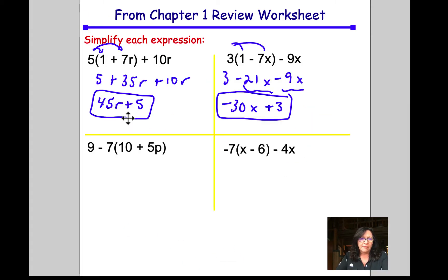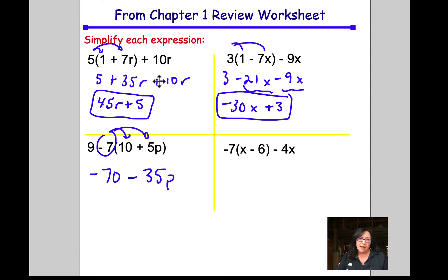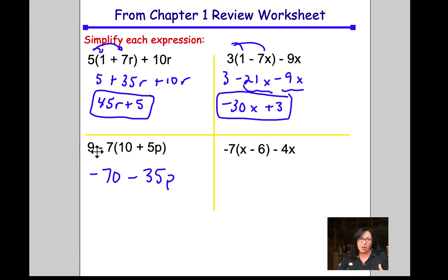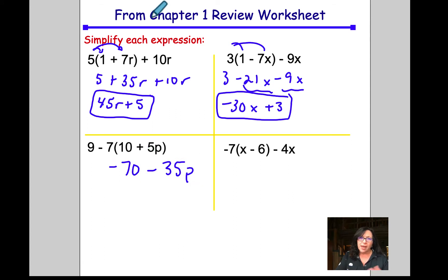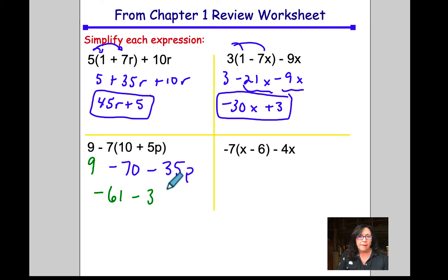For this problem on the left, we're going to distribute this negative 7 to both terms. We get negative 70 minus 35p. But there's still this 9 out here. I want to make it really clear that you never, ever multiply or subtract this 9 minus 7 first, as long as the 7 is attached. So I've taken that value — negative 70 minus 35p — but don't forget the 9 out front. So 9 minus 70 is negative 61 minus 35p, and that's our final answer.